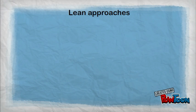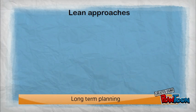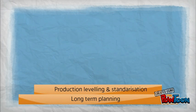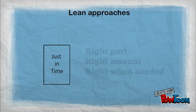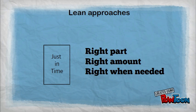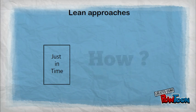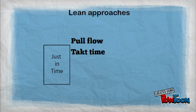Lean manufacturing is better illustrated through a house model. It is based on long-term planning, using production leveling and standardization. This relies on the just-in-time philosophy — having the right part in the right quantity precisely when it is needed. This is achieved through pull-flow manufacturing and demand-based production, and takt time: the measure of the cycle time needs to meet customer demand.